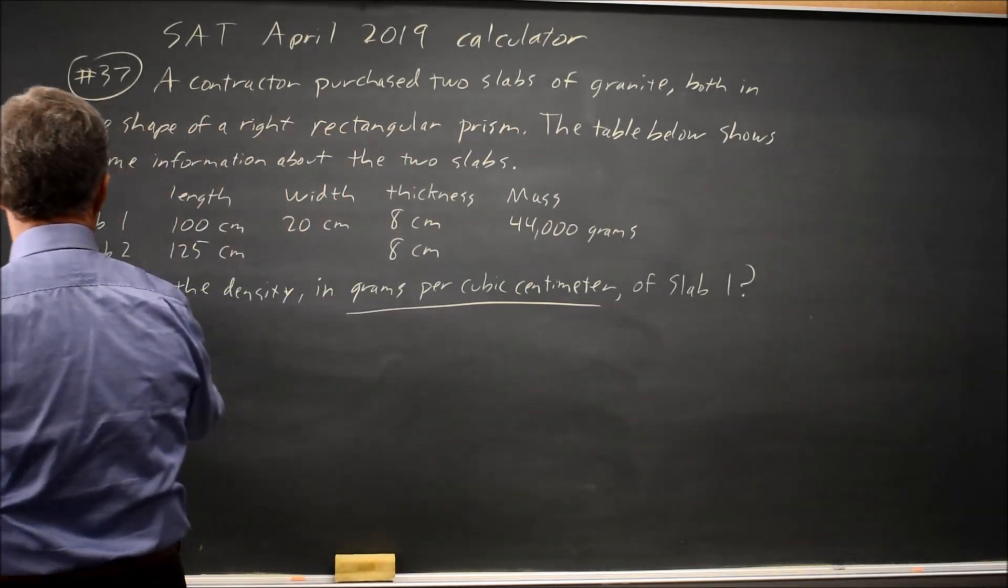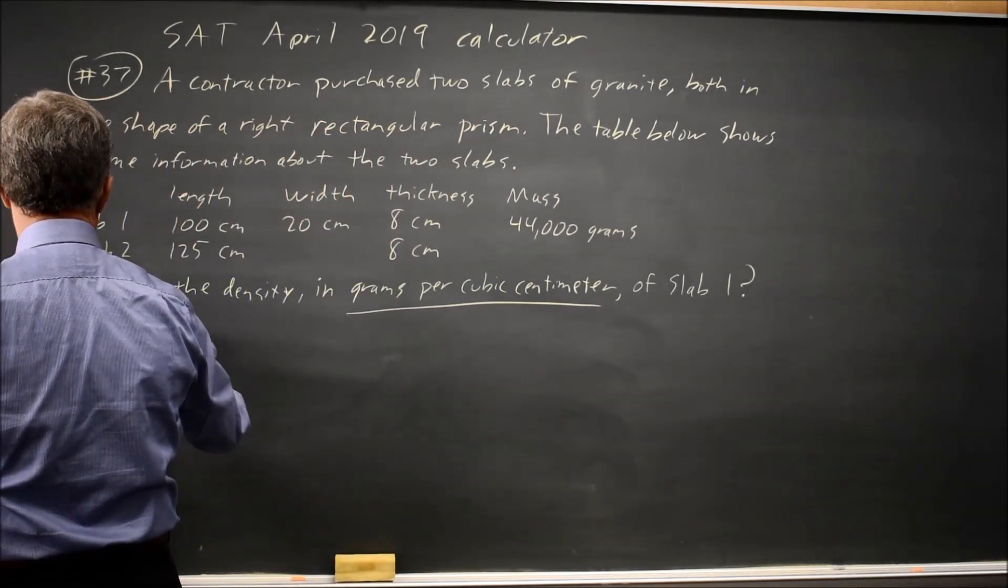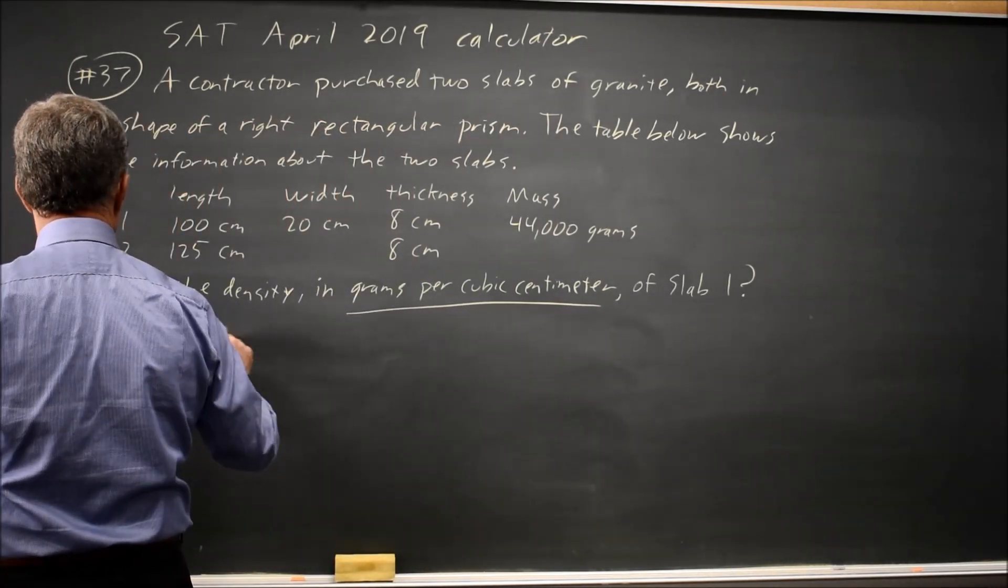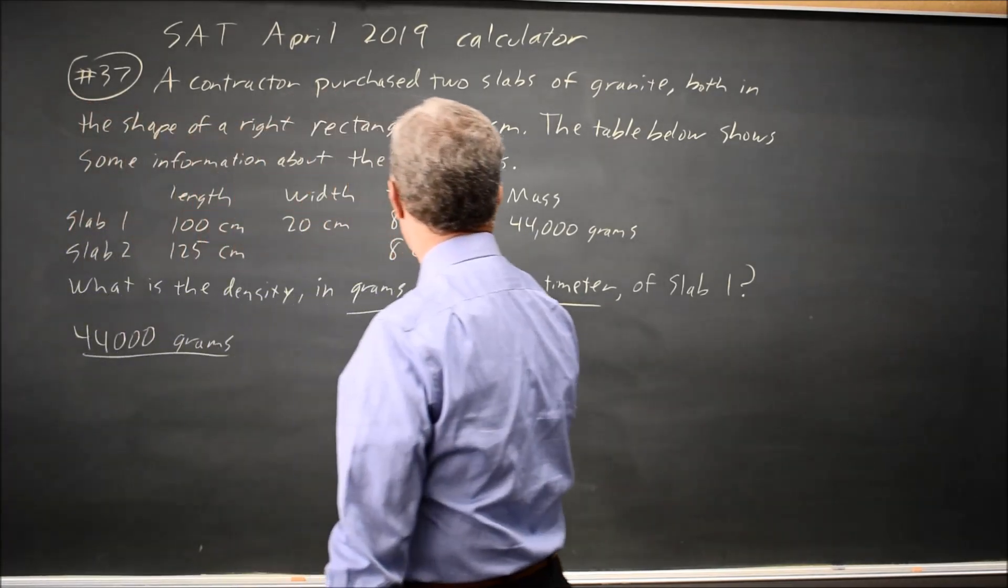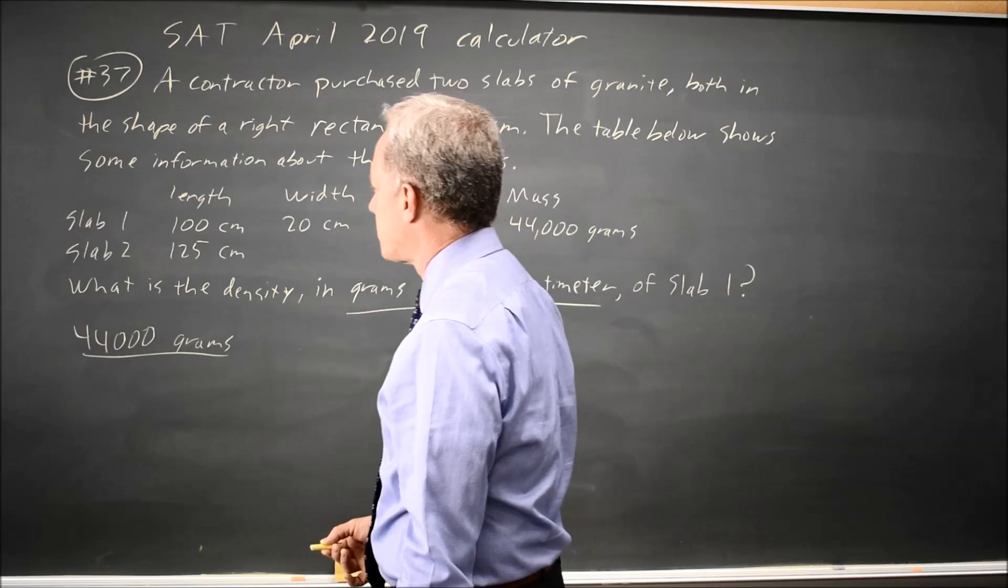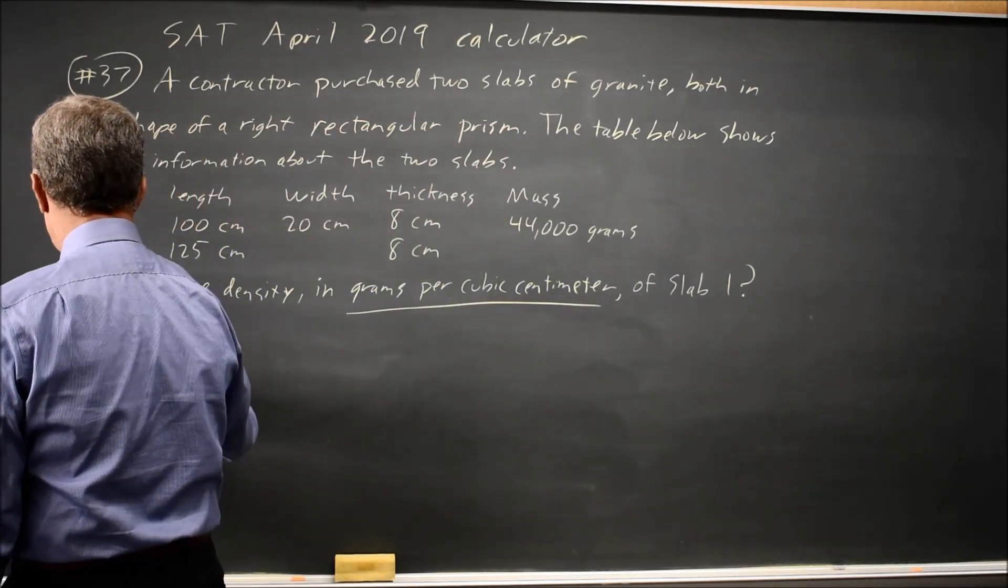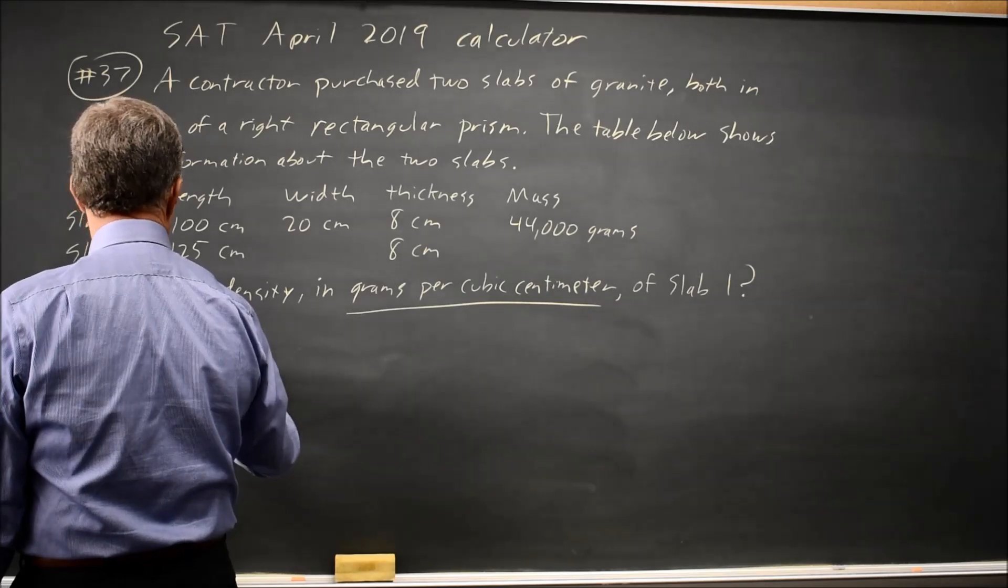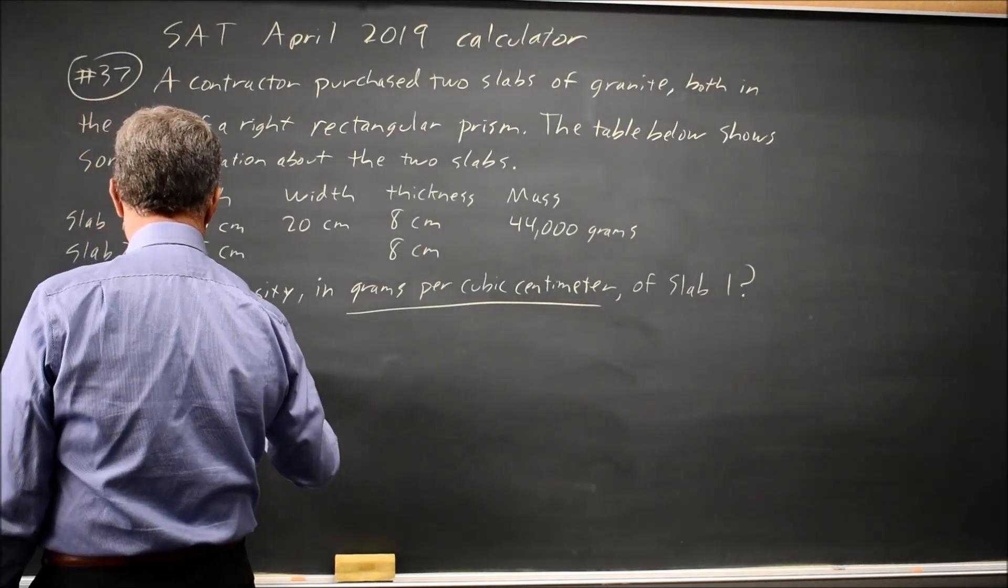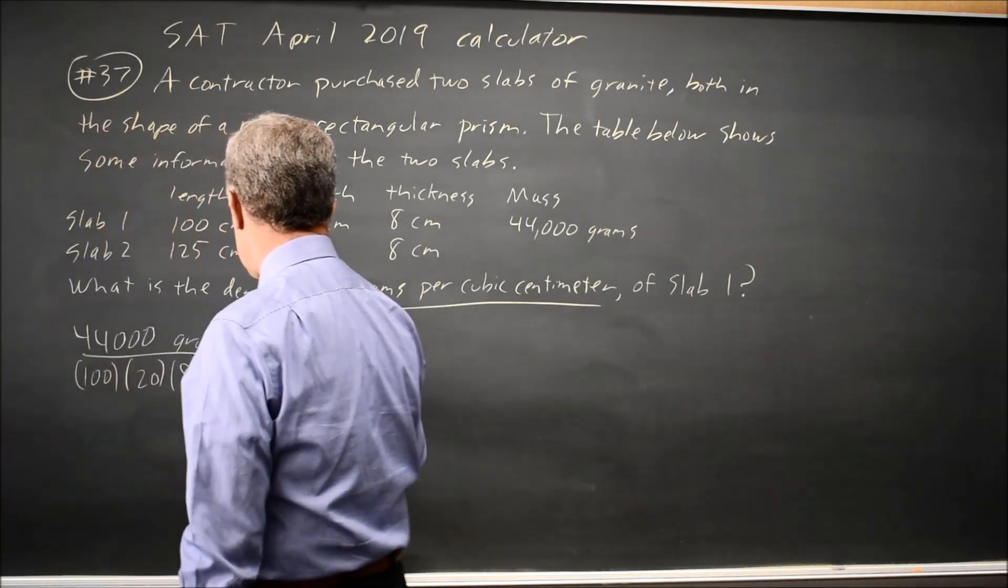we take our grams, which is 44,000 grams, and per means divide by, so we're going to divide by the cubic centimeters, which is 100 centimeters times 20 centimeters times 8 centimeters, that's centimeters cubed, or cubic centimeters.